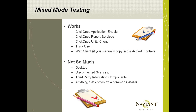Once you have refreshed your test environment and you're ready to do your upgrade, there are a number of things you can test side-by-side on an end-user workstation — you can have both a production and a test application on the same machine. Anything deployed with a ClickOnce application — app enabler, report services, and the Unity client — can exist side-by-side because ClickOnce creates an instance of the application for each deployed application. The thick client and the WebClient can also run side-by-side as long as you have both ActiveX controls.